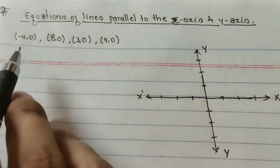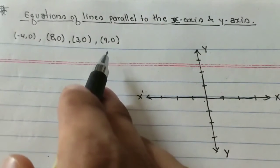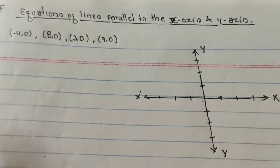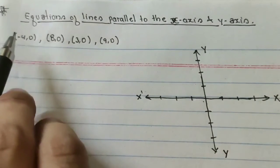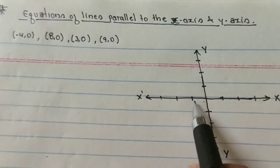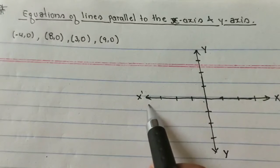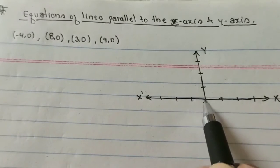Here suppose these are the points given and you're asked to plot on the graph. So here the first point is (-4, 0). So here suppose this is -4 and 0. 0 is here.